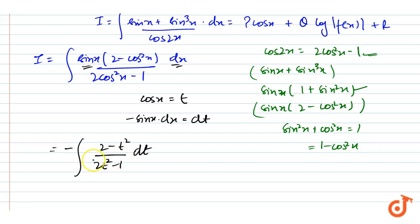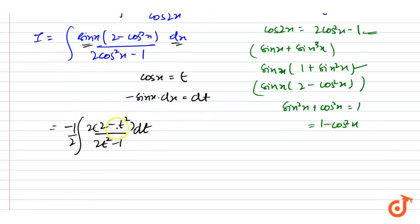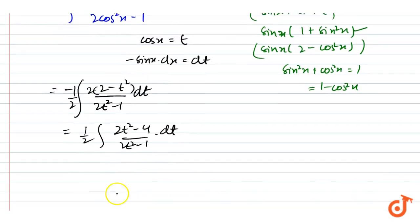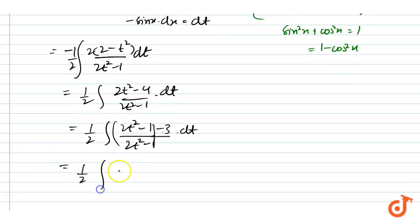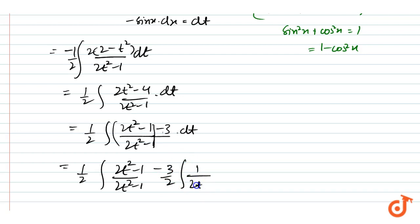If we multiply and divide by 2, then we have minus one half times the integration of (2t squared minus 4) divided by (2t squared minus 1) dt. Separating both terms, we can write 2t squared minus 4 as (2t squared minus 1) minus 3, so we get one half times the integration of 1 minus 3 divided by (2t squared minus 1) dt.